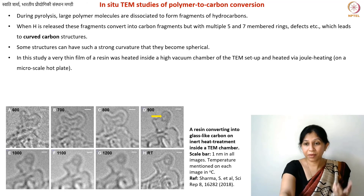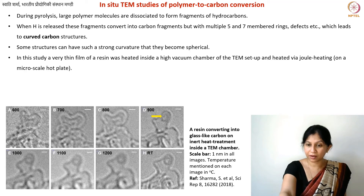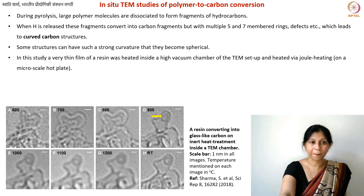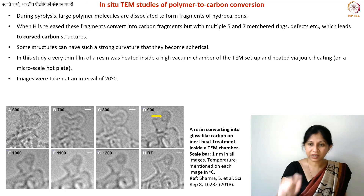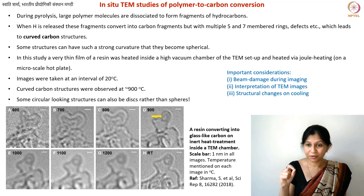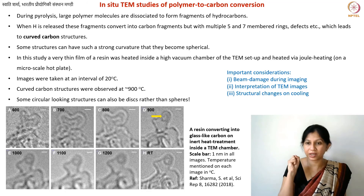Some of these structures can also become completely spherical. If you go to this publication you will see other images showing completely spherical structures that are 0.7 nanometers in diameter — also the diameter of C60, buckminsterfullerene. In this study, it was very important to ensure there was no beam damage: since the electron beam passes through the material while taking images, it can damage the material. We turned off the beam during heating when pyrolysis was taking place.